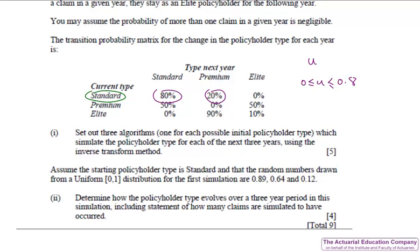So the algorithm will simply be, we generate a random number U from a uniform 0-1, and then if U is between 0 and 0.8, we will remain in standard next year. And if U is between 0.8 and 1, we'll move to premium next year. You can do similar algorithms for the other types of policyholder. However, please read the question carefully.